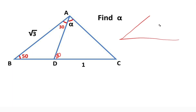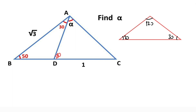Let me remind you: if we have an isosceles triangle whose base angles equal 30 degrees, and if this side is given one unit, that means the other side must be equal to root 3.